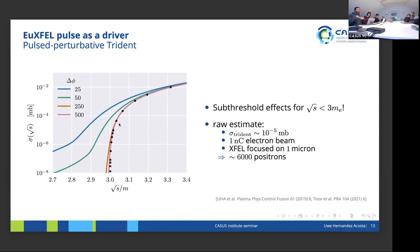Just to put numbers on it: with a cross-section of about 10^-5 millibarns, one nanoCoulomb of electron beam, and focusing the XFEL to one micron, you can expect around 6,000 positrons per pulse shot per pulse coverage of the electron beam. This is a huge number that can saturate detectors, making it really important to include this effect in any experiment operating in this regime.